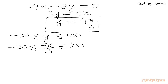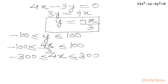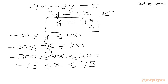We multiply the inequality by 3 to get: minus 300 ≤ 4x ≤ 300. Then dividing by 4, we get x in the interval minus 75 to 75, endpoints included. Now since y equals 4x over 3, x must be divisible by 3 for y to be an integer.